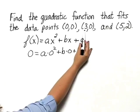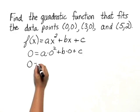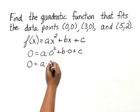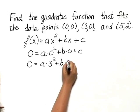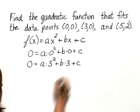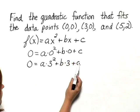If f of 3 is 0, then we have 0 equals a times 3 squared plus b times 3 plus c.